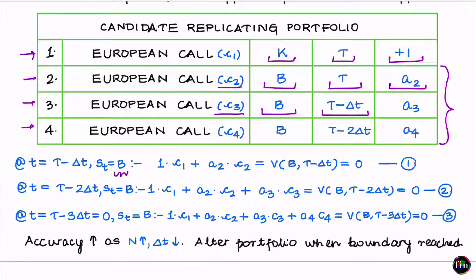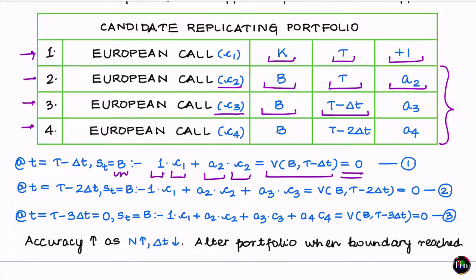The value of the replicating portfolio is 1 times C1 plus a2 times C2. I want this to equal the value of the target option, which is zero since I am standing on the red boundary. This first equation gives me a2, the only unknown. I will need the Black-Scholes formula to evaluate C1 and C2 at time T minus delta-t with stock price equal to B.